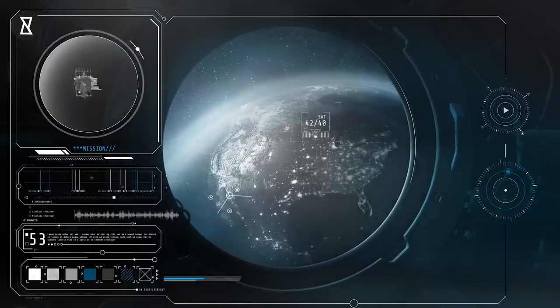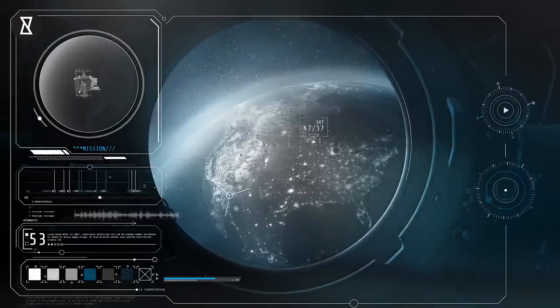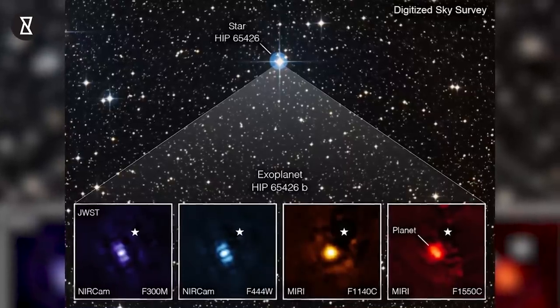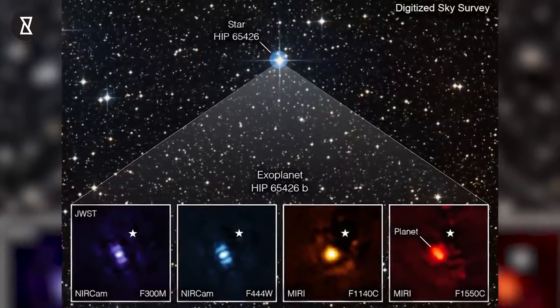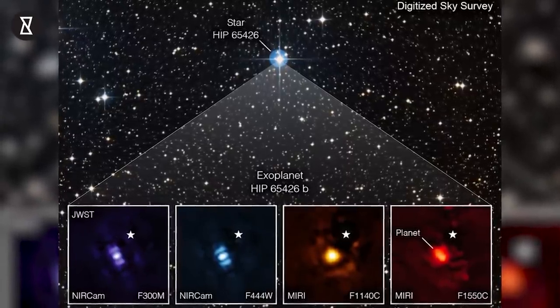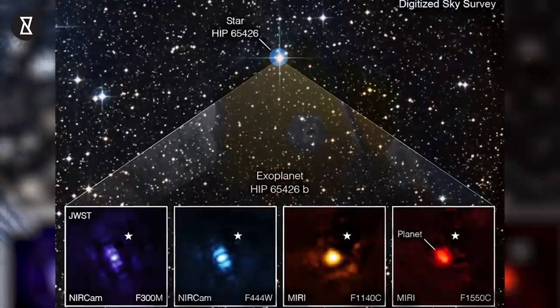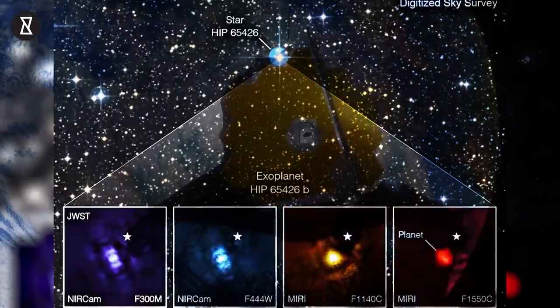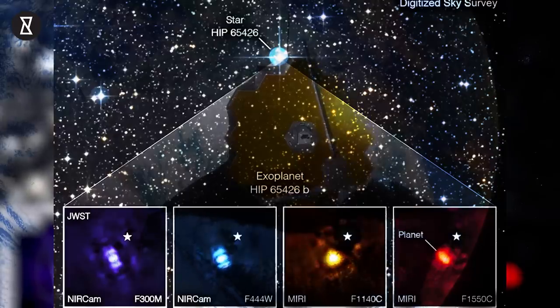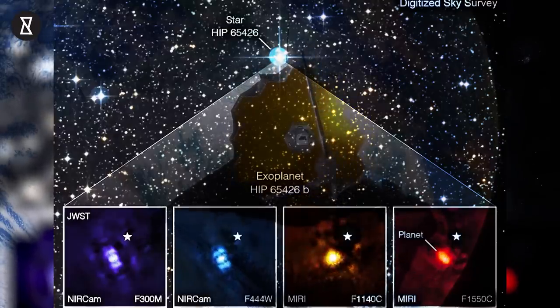The images are far from your standard science fiction fare, but they show that the planet was easily detected, standing out like a sore thumb against the dark background of space. The observations of this planet is just the first sign of what JWST can do in imaging planets around other stars.